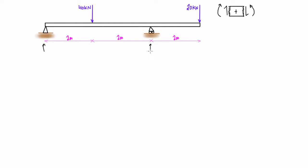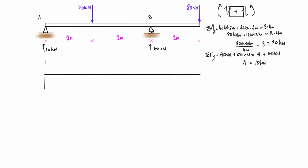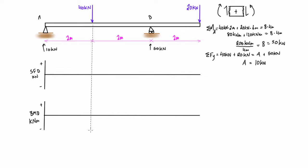We're going to see in this video that we're going to get something funky with the deflected shape that we haven't seen yet in previous videos. But before we get there, we want to do the free body diagram. The reaction at A is 10 kilonewtons and B is 50 kilonewtons. Then we set up our shear force diagram and bending moment diagram with grid lines at our points of interest — basically at our reactions and applied point loads.